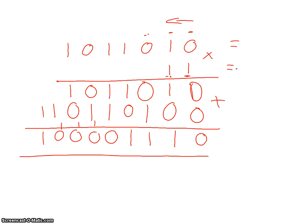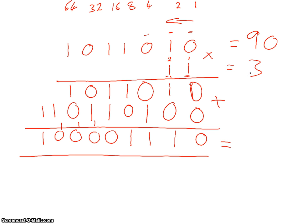We'll convert to denary to check. For the top number we have no ones, a two, no fours, an eight, a sixteen, no thirty-twos, and a sixty-four. So sixty-four plus sixteen plus eight plus two gives us ninety. Then we have a one plus a two gives us three, so we're looking for a result of two hundred and seventy.